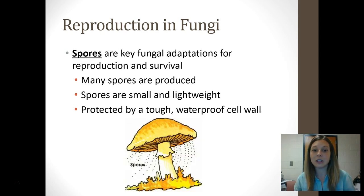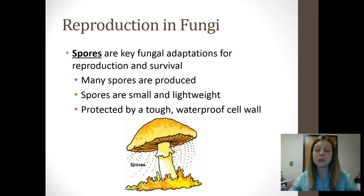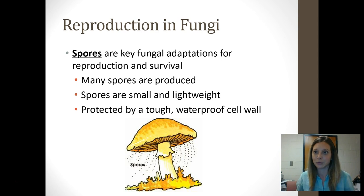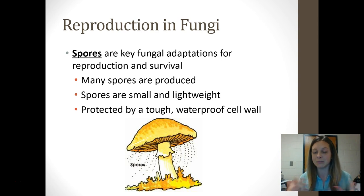Spores are an interesting adaptation because they allow a fungus to survive and reproduce really easily. Why? Because they produce tons of spores, ensuring survival through sheer numbers. They're very small and very lightweight, which makes them easily picked up by wind and spread really far. They're also protected by a tough, waterproof cell wall, making them good for protection.